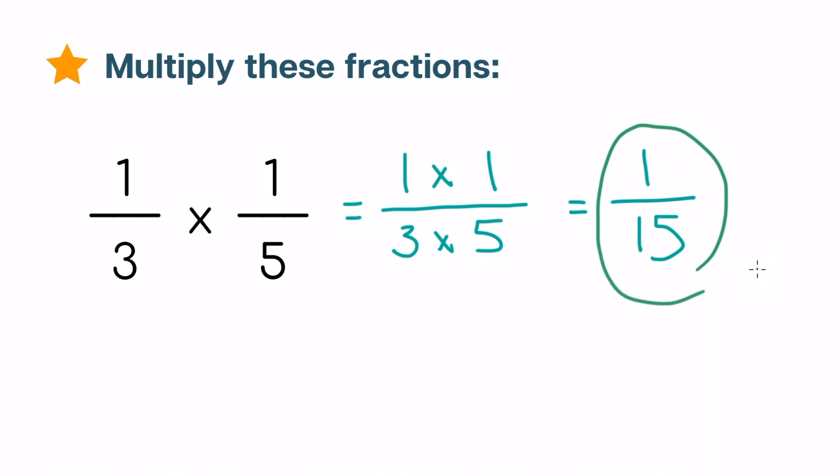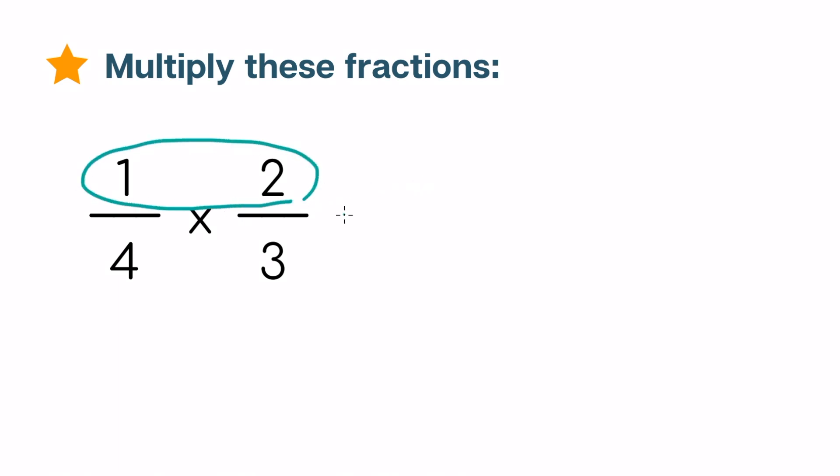Now the next couple questions are going to get a little bit harder. Let's try 1 over 4 times 2 over 3. We'll do the same thing. Just take the numbers in the numerators and multiply them. So 1 times 2 equals 2. This is the numerator of our answer.